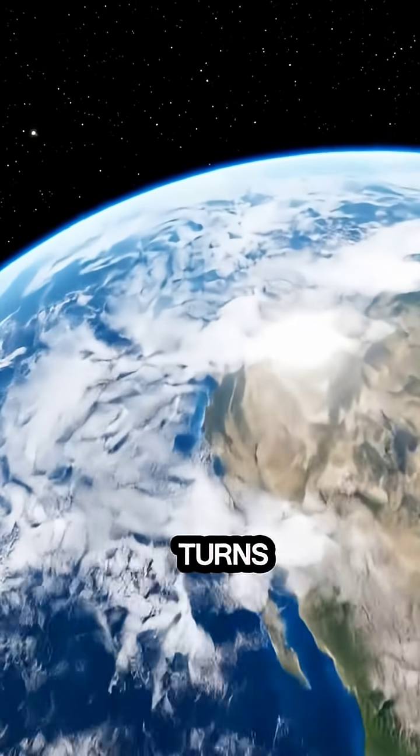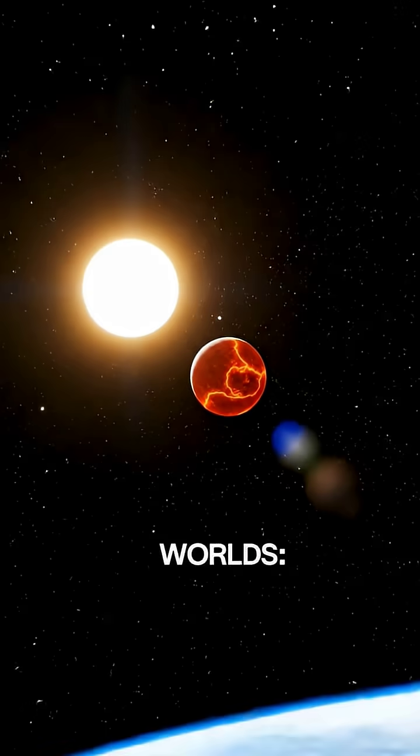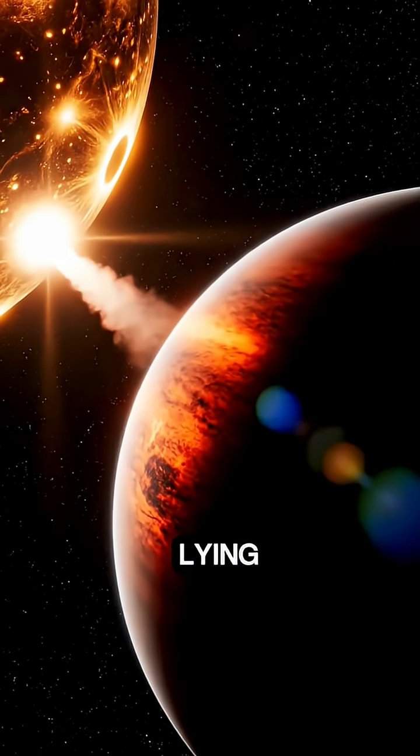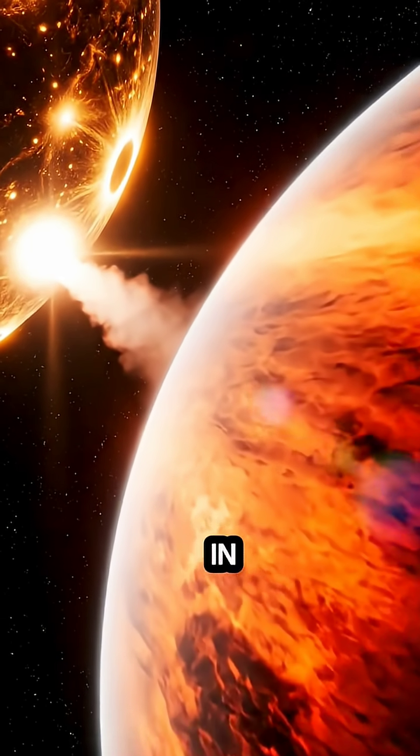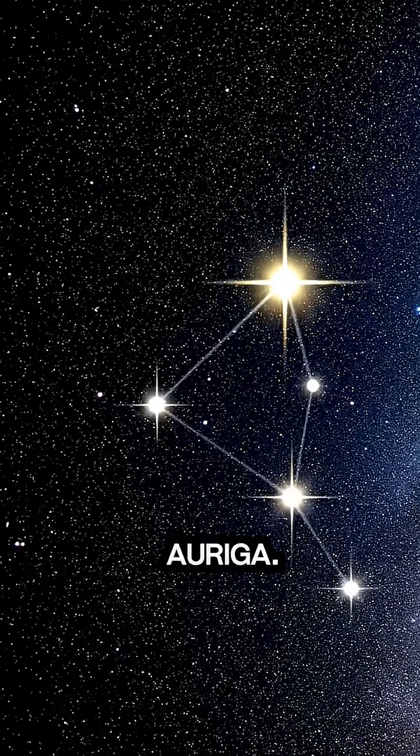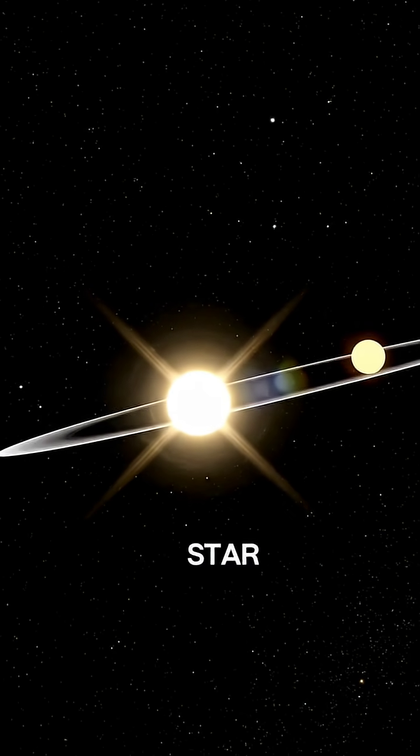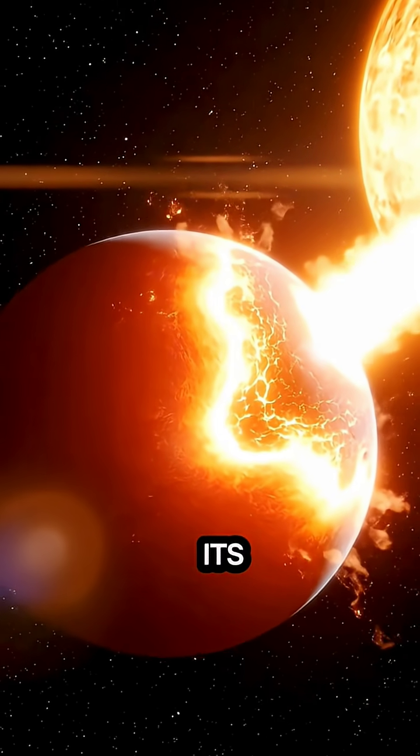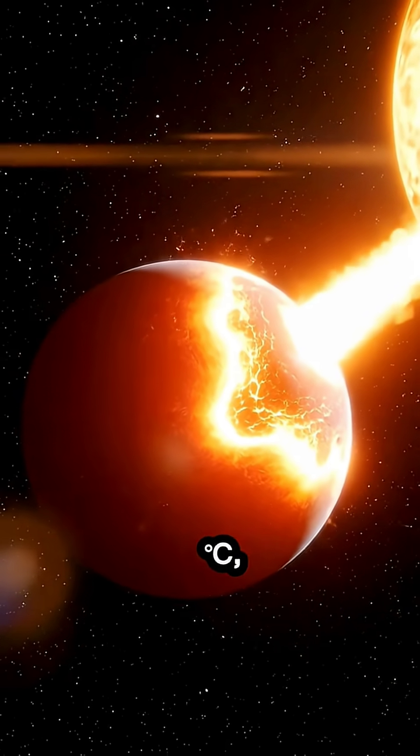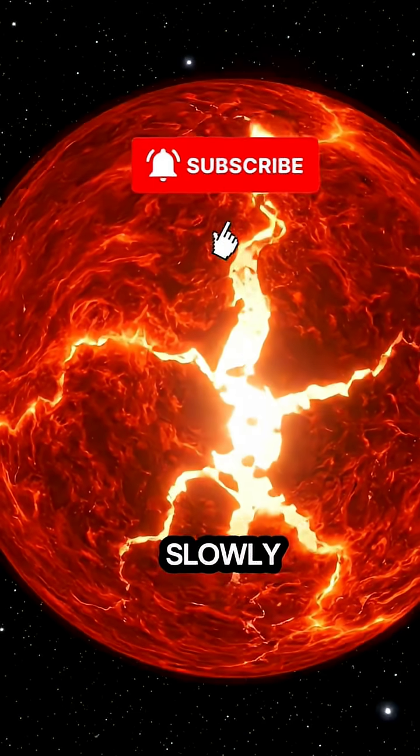Our telescope turns towards stranger worlds. Wasp 12b, lying about 1,400 light years away in the constellation Auriga. It orbits its star so closely that its surface reaches 2,500 degrees, and gravity is slowly tearing it apart.